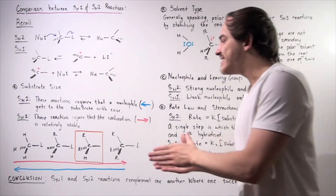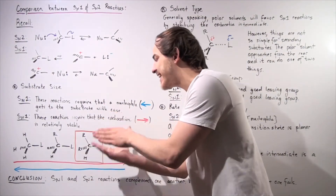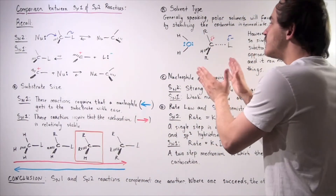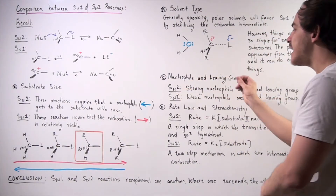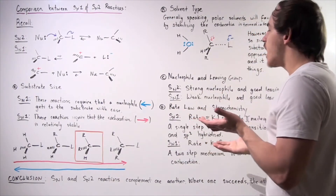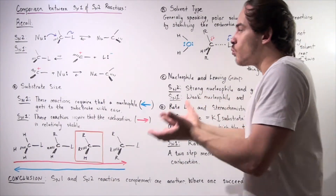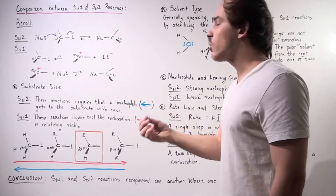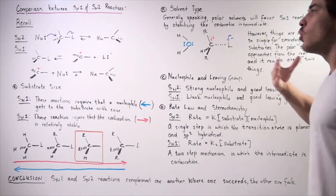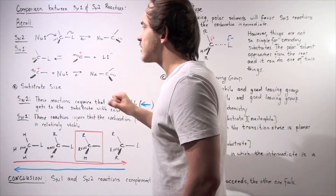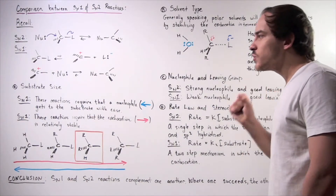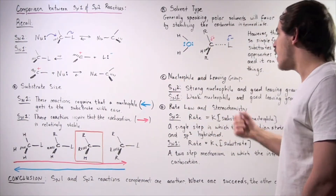So anytime we're looking at a secondary substrate, we have to take into consideration the solvent type, the nucleophile, and the leaving group. We have to weigh our choices and see which reaction is more likely to take place. Generally speaking, a polar solvent will stabilize SN1 reactions more than SN2 reactions, but for secondary substrates we really have to look at the nucleophile and leaving group.